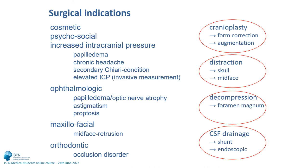These are the surgical techniques: cranioplasty for form correction and augmentation; distraction techniques to increase skull volume and correct mid-facial retrusion; decompression at the foramen magnum in Chiari conditions; and CSF shunting or endoscopic third ventriculostomy when there is a disturbed CSF circulation.